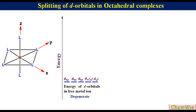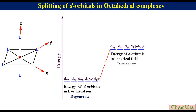When the ligands approach towards the metal ion for the formation of a metal complex, the energy of d-orbitals is raised due to repulsive interaction between the negative charge or negative pole of ligands and the electrons on the metal. If the ligand environment is spherical, which is a hypothetical case, the energy of the five d-orbitals will be raised to the same extent but they will still remain degenerate. In an octahedral ligand environment, ligands approach the metal along x, y and z axes.